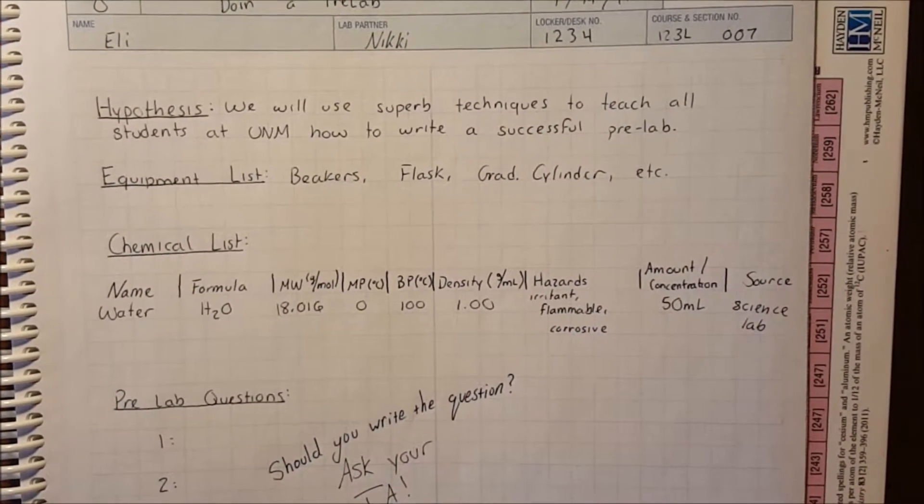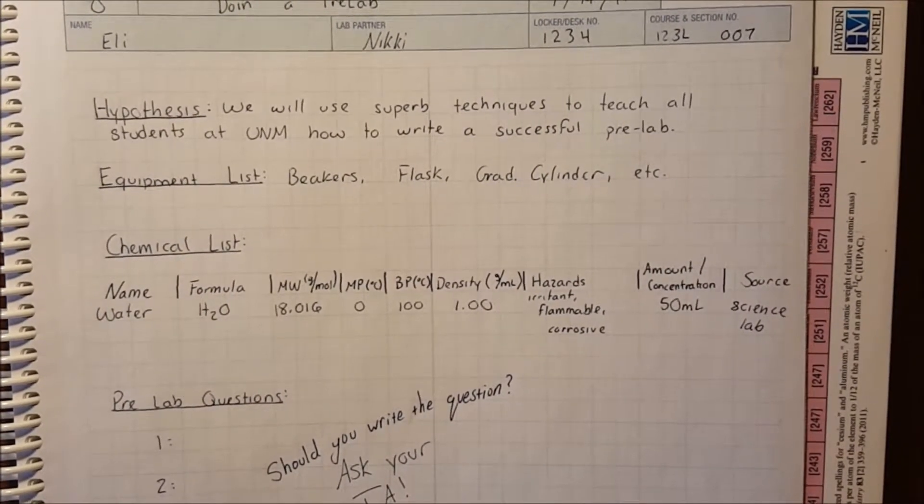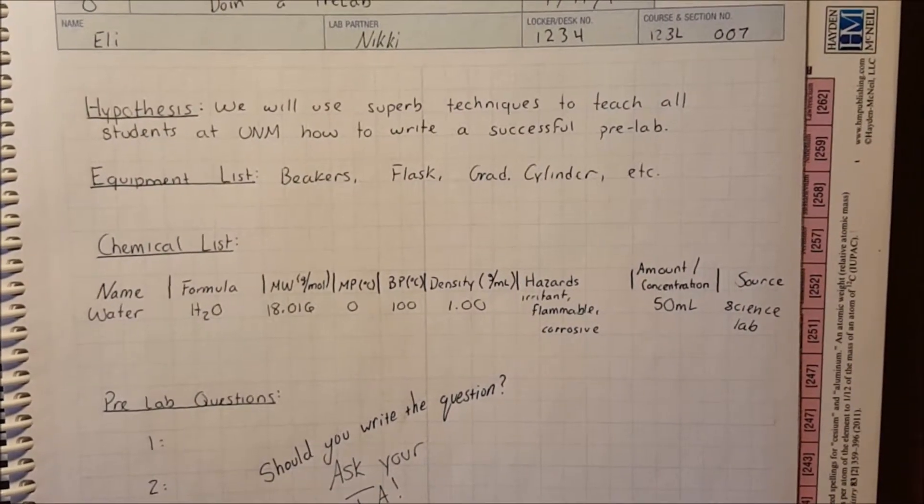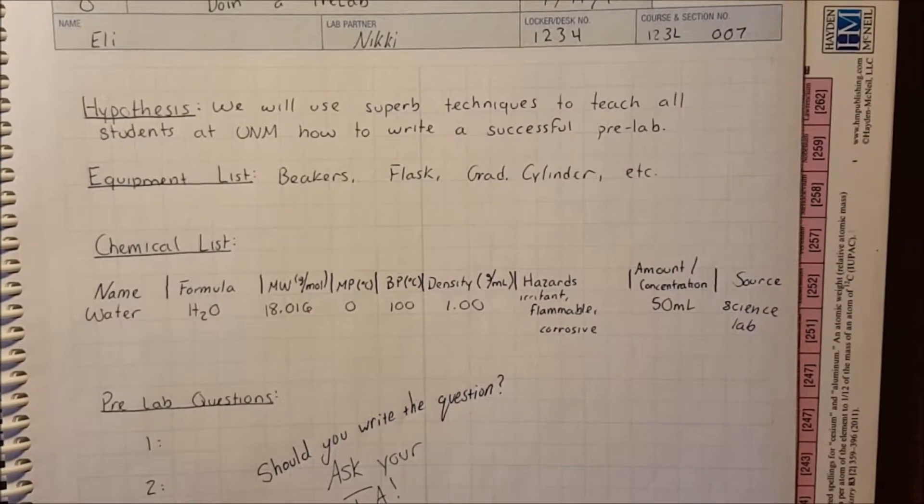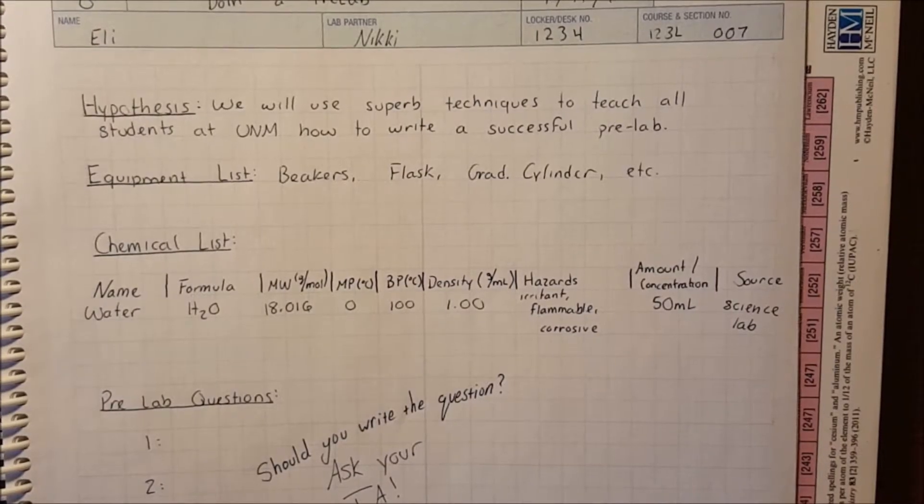So let's say if you are using crystallization to purify your product, your hypothesis should read something like, we are combining blank and blank to form an intermediate compound and then through crystallization our final product will be achieved.